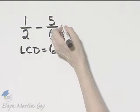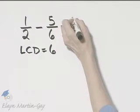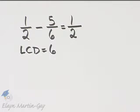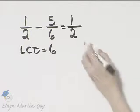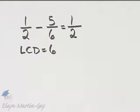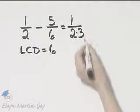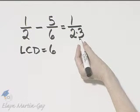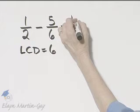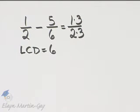So let's now rewrite each fraction so that we have a denominator of 6. What do I multiply 2 by in order to get 6? I multiply 2 by 3. And if I multiply the denominator of a fraction by 3, I must multiply the numerator by 3.